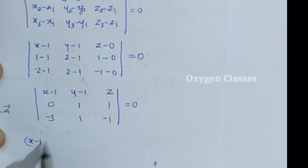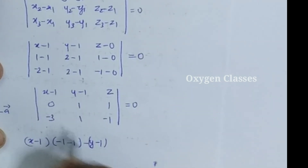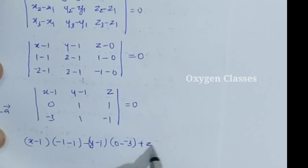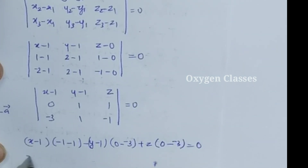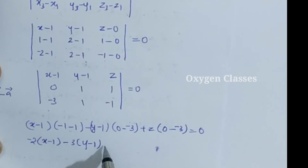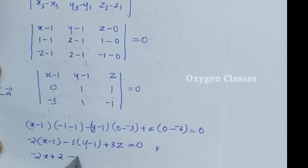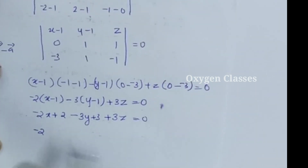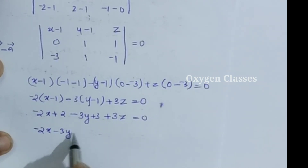Expanding: (x-1)((-1)(1) - (1)(1)) - (y-1)((0)(-1) - (1)(-3)) + z((0)(1) - (1)(-3)) = 0. That is: -2(x-1) - 3(y-1) + 3z = 0. Expanding: -2x + 2 - 3y + 3 + 3z = 0, so -2x - 3y + 3z + 5 = 0. This is the Cartesian equation of the plane.